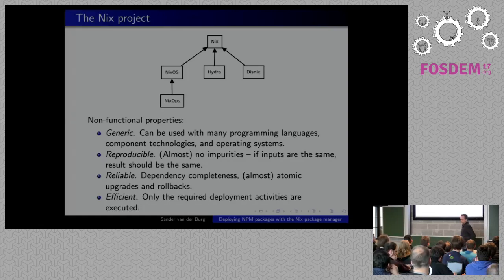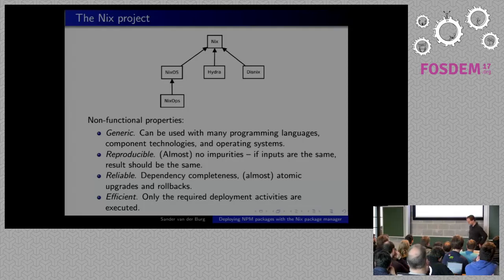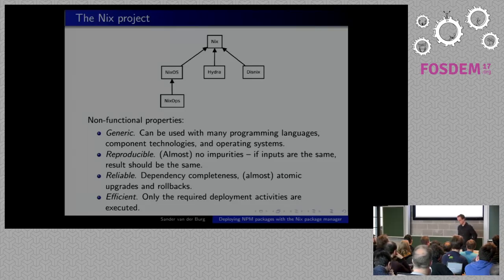Another property is reliable deployment. Nix ensures that dependencies are always complete, and also offers almost atomic upgrades and rollbacks. Nix also tries to be efficient — it only carries out the activities it needs to do and nothing more, trying to make the deployment process not unnecessarily long.